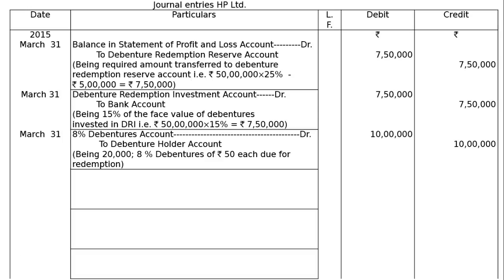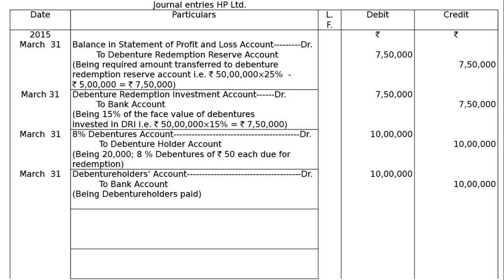Next, 8% debentures account debited to debenture holders account for the first installment of 50 lakhs divided by 5. Being 20,000 8% debentures of rupees 50 each due for redemption, that is one-fifth of 1 lakh debentures — 20,000 debentures of rupees 50 each, equalling rupees 10 lakhs, both debit and credit. When debenture holders are paid: debenture holders account debited to bank account, rupees 10 lakhs, being debenture holders paid.